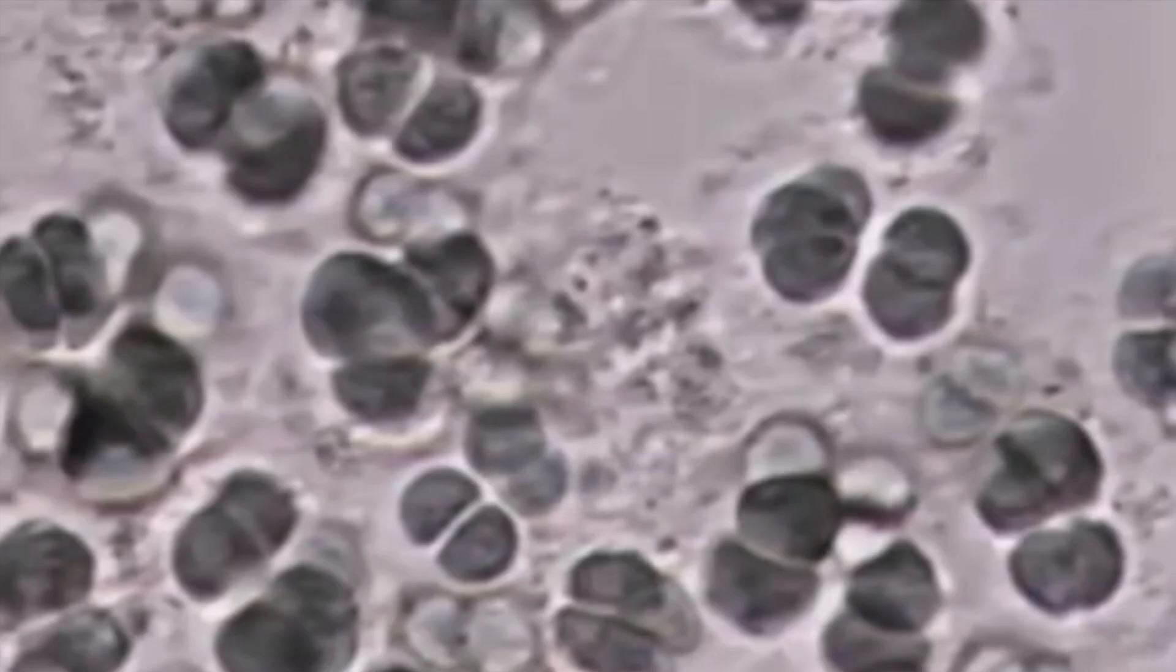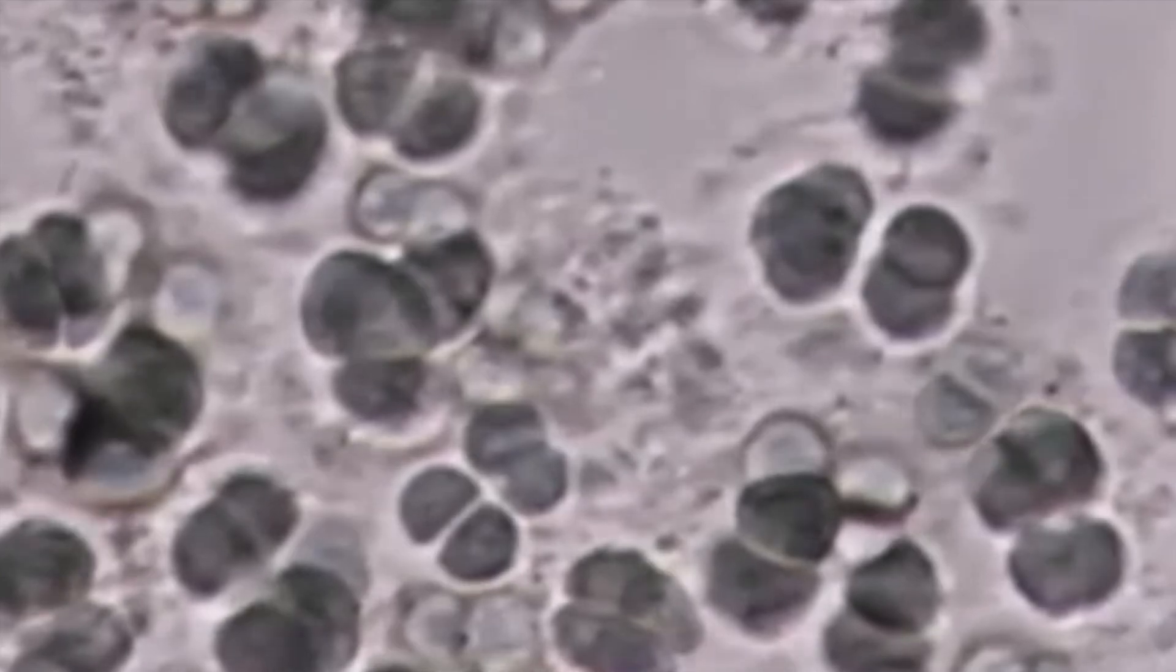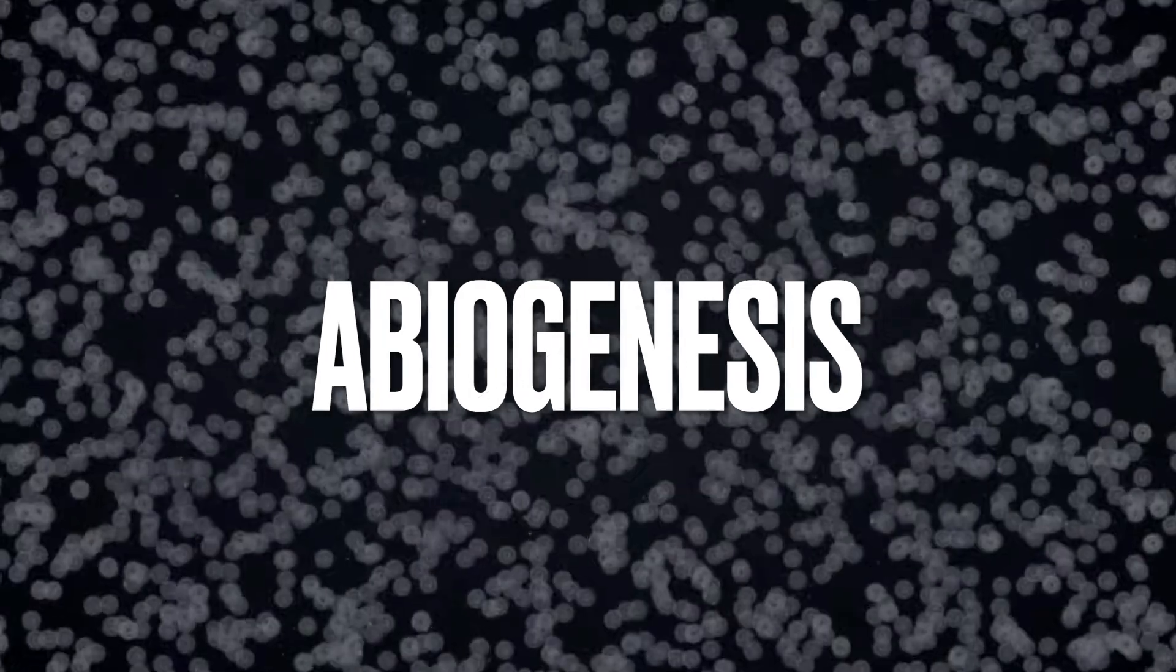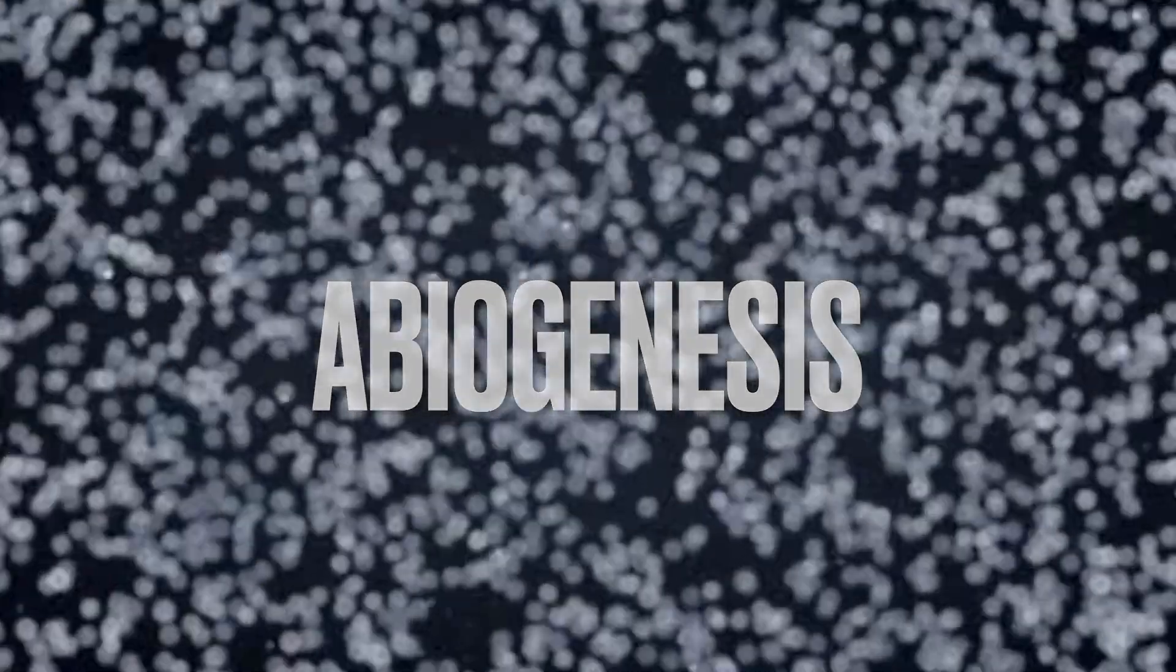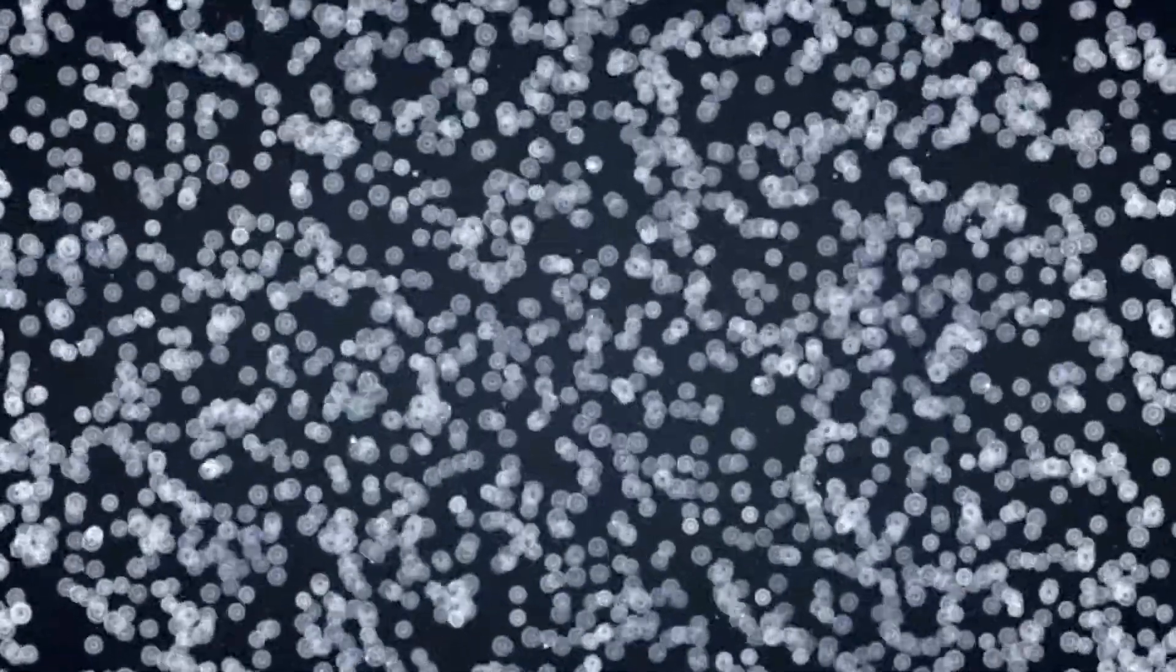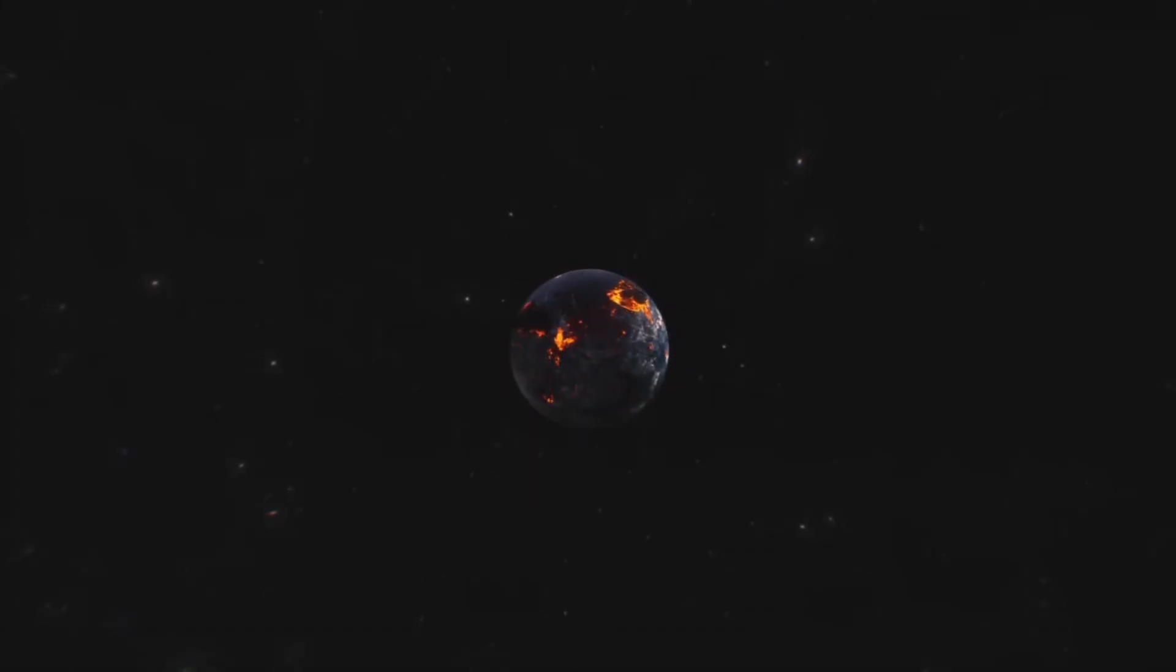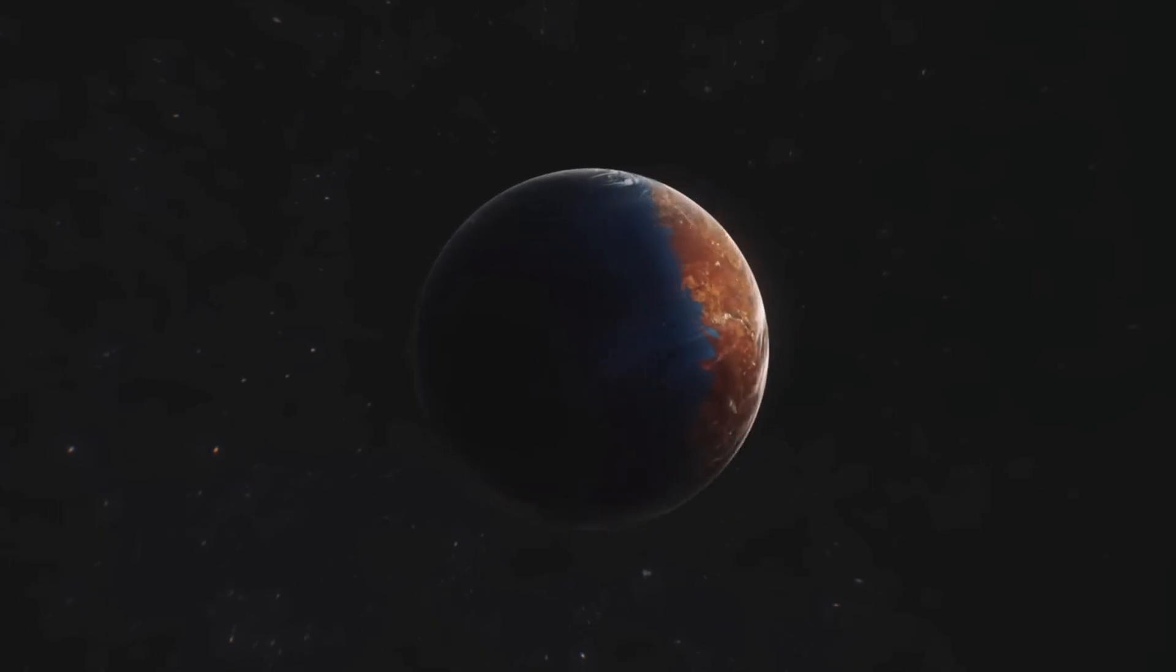However, even before the emergence of eukaryotes and the transition to multicellularity, there was another more fundamental and perhaps even less well understood process that occurred, the initial spark of life itself. This is referred to as abiogenesis, the process through which life arises from non-living material. On Earth, this occurred roughly three and a half billion years ago, or around 500 million years after the formation of our planet.